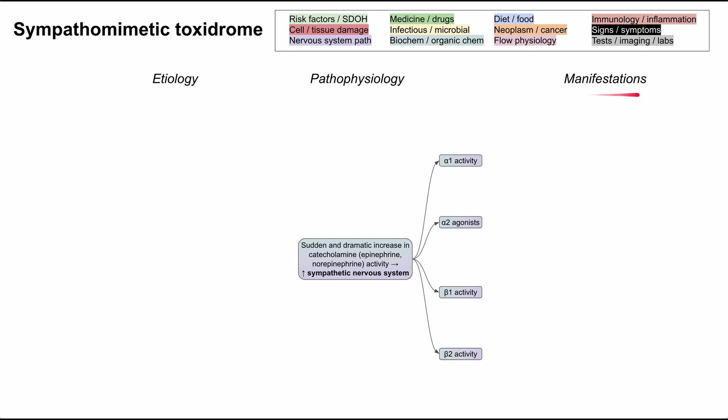We'll get to all of them when we talk about manifestations, and we'll see how the many drugs that cause sympathomimetic toxidrome hit different receptors. Some hit one more than the other, some hit them all pretty equally. But for now, know that there are four receptors and they have slightly different downstream effects.